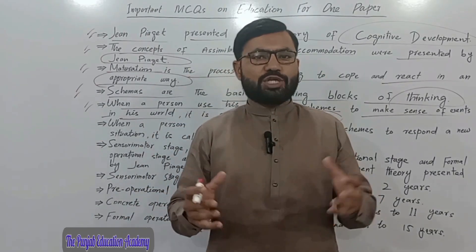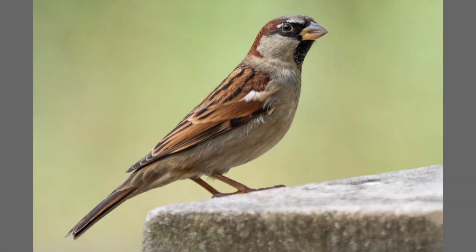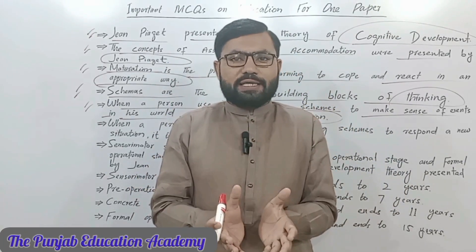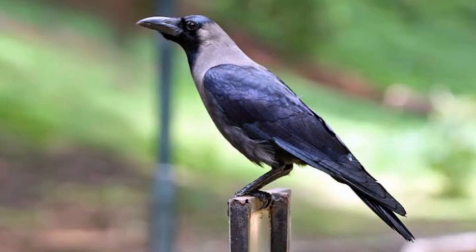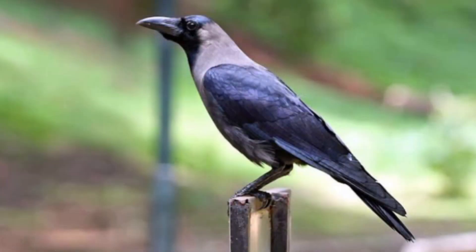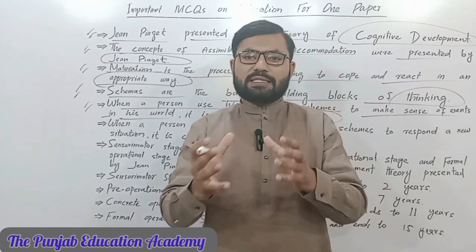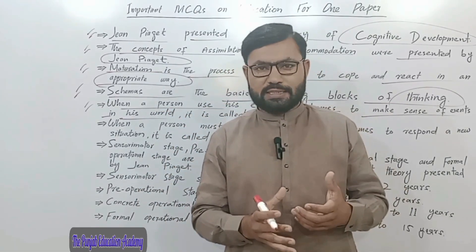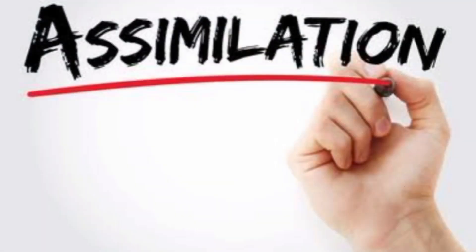For example, suppose a child has a schema related to birds — two legs, wings, and a beak. Now, when he sees a sparrow, he recognizes it as a bird because it has wings and a beak matching his existing schema. The process of recognizing a new object using an existing schema — this act is called assimilation.